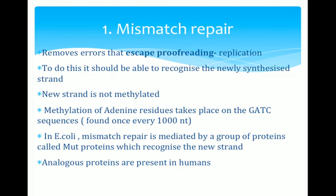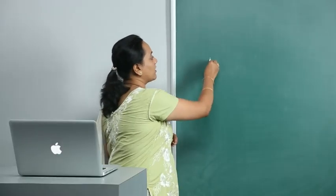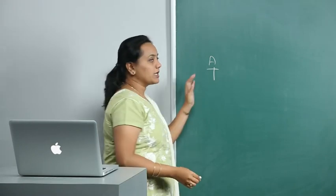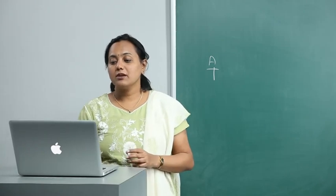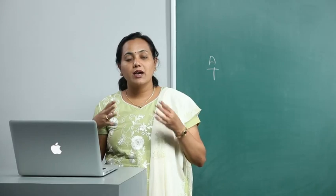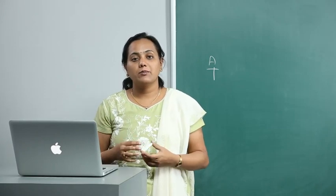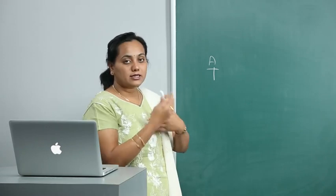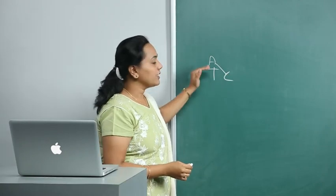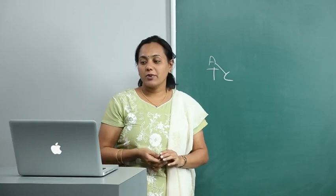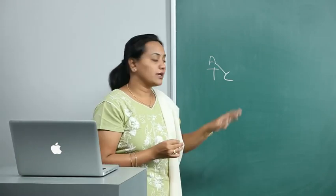Mismatch repair is for replication errors — errors that occurred during replication resulting in a mismatch. Suppose A was supposed to base pair with T, but instead there is something else — that is a mismatch. Mismatch repair removes errors that escape the proofreading during replication, for example where A has formed a bond with C instead of T.